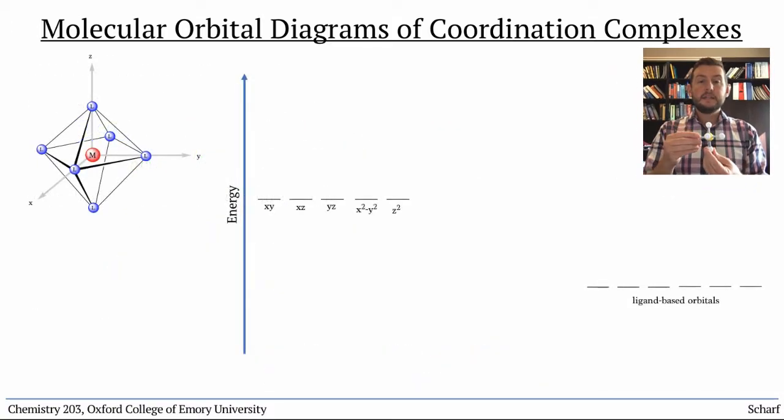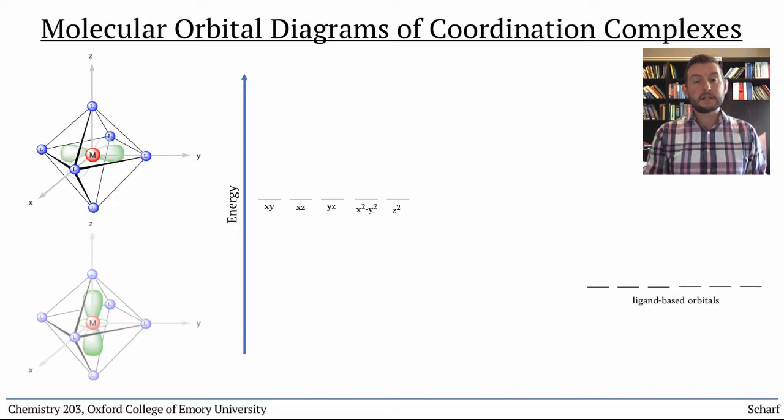The six ligands are arranged along the x, y, and z axes, two to an axis. Of the five d orbitals, the dx²-y² and dz² are the only two to point at the ligands. So those are the ones that make bonds.